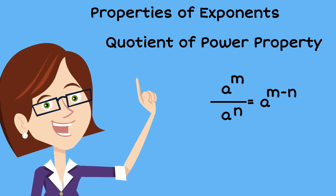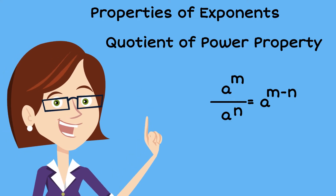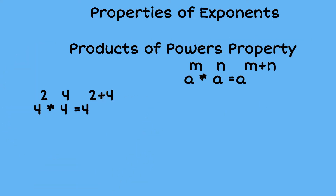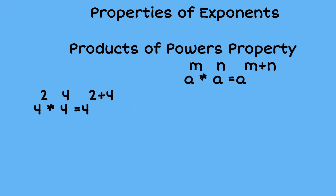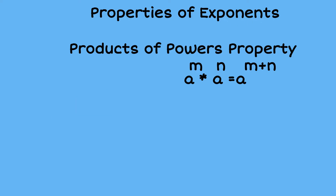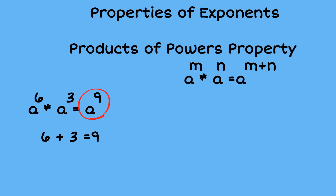Now let's run through a couple examples, starting with the product of powers property. The first example is four to the second times four to the fourth. Four is our like base, so that's going to be four to the two plus four, or four to the sixth power. A second example would be a to the sixth times a to the third. Since we're multiplying like bases we add the exponents, giving us a to the ninth power.